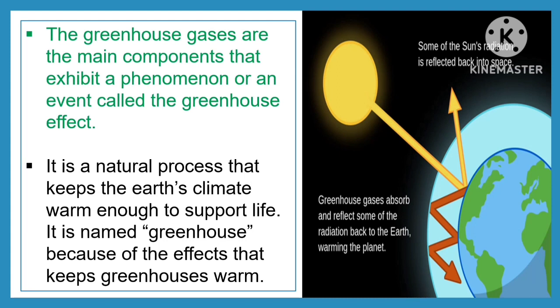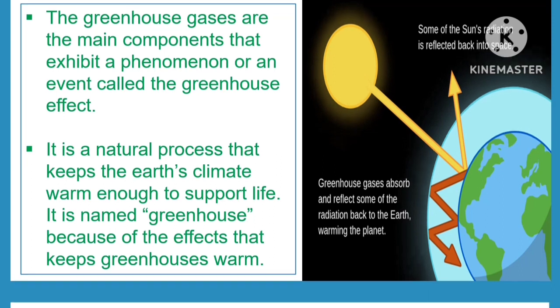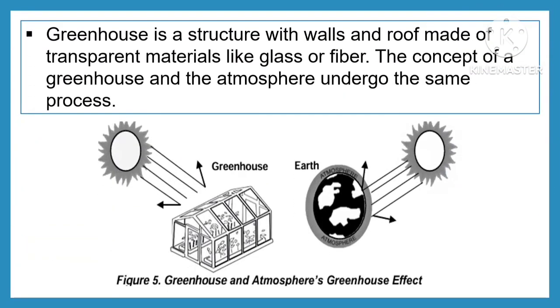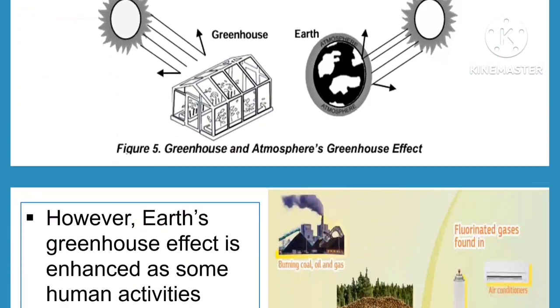The greenhouse gases are the main components that exhibit a phenomenon called the greenhouse effect. It is a natural process that keeps the Earth's climate warm enough to support life. It is named greenhouse because of the effects that keep greenhouses warm. A greenhouse is a structure with walls and roof made of transparent materials like glass or fiber, and the greenhouse and the atmosphere undergo the same process.